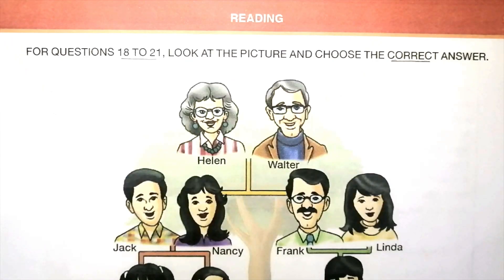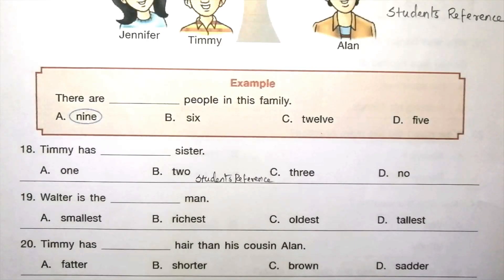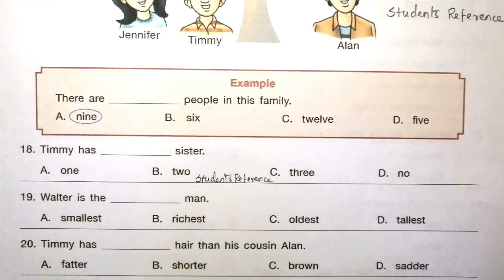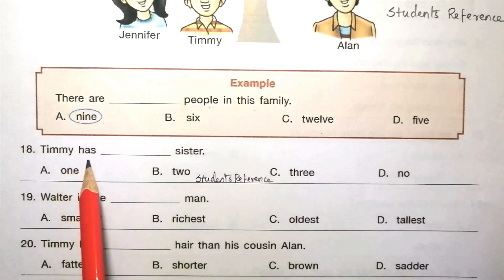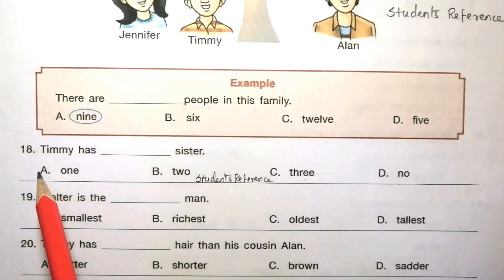Next topic is reading. For questions 18 to 21, look at the picture and choose the correct answer. Look at the picture carefully. Example: there are 9 people in this family. Question 18: Timmy has dash sister — 1, 2, 3, no. The answer is A, 1. Timmy has 1 sister. Look at the picture — Timmy has one sister, Jennifer.